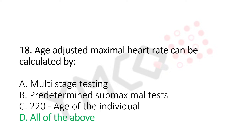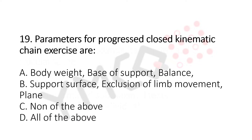Let's move to question number 19. Parameters for progressing closed kinematic chain exercises are: Option A, body weight, base of support, balance. Option B, support surface, exclusion of limb movement, plane. Option C, none of the above. Option D, all of the above. And the answer is Option D, all of the above.